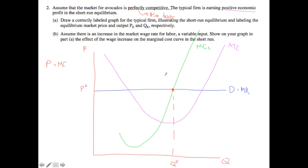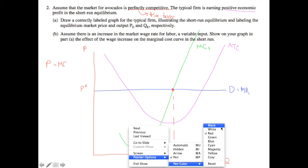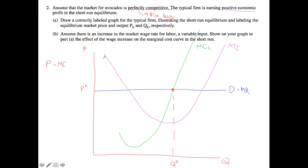So let's think about now what happens when there's an increase in the market wage for labor, a variable input. So in this case, what's essentially happening is the marginal cost for every additional unit that's produced is going up because the cost of labor has now gone up. So when wages go up, it leads to an increase in marginal cost as well. And therefore, we need to show an upward shift of the marginal cost curve.